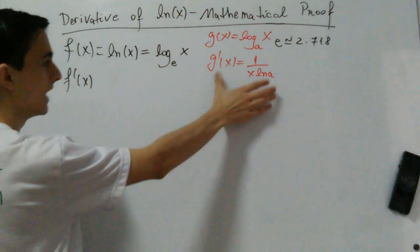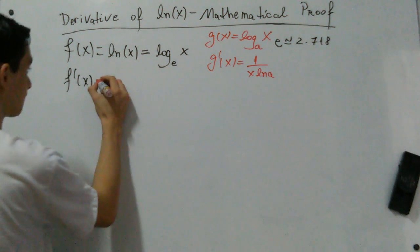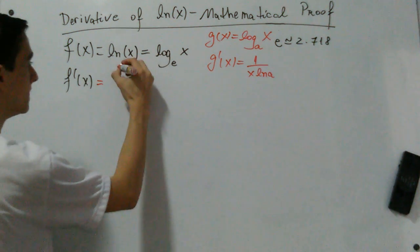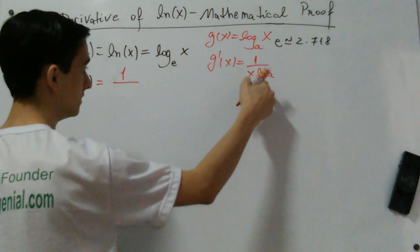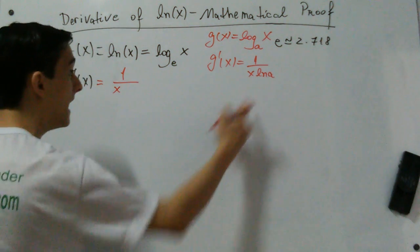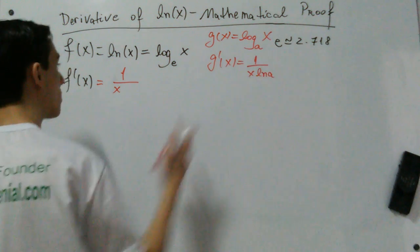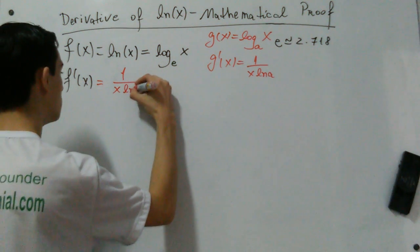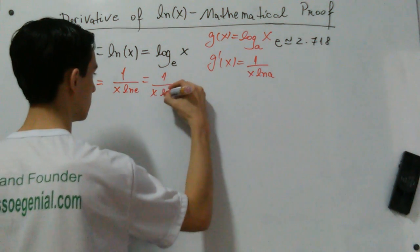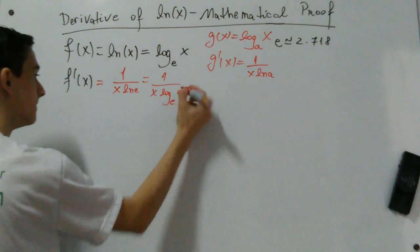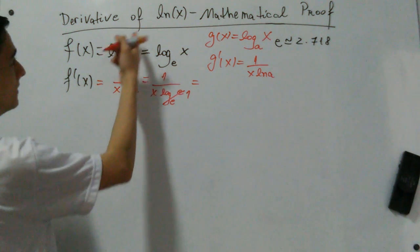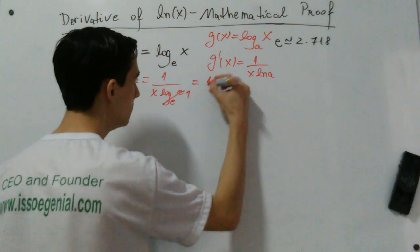So if we apply this here, we have a logarithm base e of x. The derivative of this function is going to be 1 over x times natural log of a. The base here is e, so natural log of e. This is 1 over x times log base e of e, and log base e of e is 1. So we can prove that the derivative of natural log of x is equal to 1 over x.